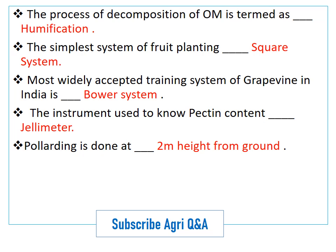The most widely accepted training system of grapevine in India is the bower system. The instrument used to know pectin content is a jelly meter. Pollarding is done at 2 meter height from the ground.